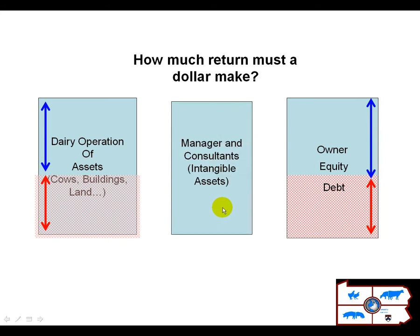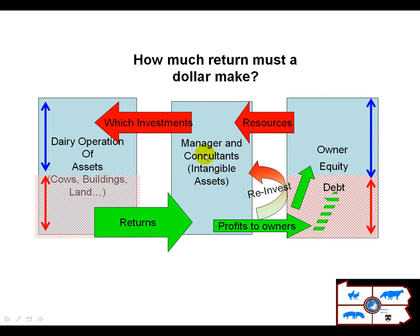Then we have the managers — the intangible assets who actually manage the operation. Owners give resources to these managers; sometimes the owner and the manager are the same person. That manager makes decisions about which investments to make on the farm and how to manage these assets, from which he gets a return. This return has to satisfy two hurdles: first, it has to pay down the debt, and second, it has to grow equity. These are obligations that have to be met for each dollar offered to the dairy, and this becomes a way to evaluate what are good investments versus bad ones — those that give greater returns than required by existing obligations.